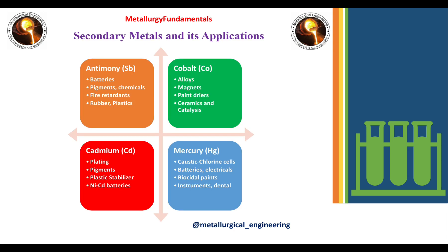Now we will see secondary metals and their applications. The first secondary metal is antimony, used in batteries, pigments, chemicals, fire retardants, rubber, and plastics. The second is cobalt, used for alloying, magnets, paint dryers, ceramics, and catalysts.